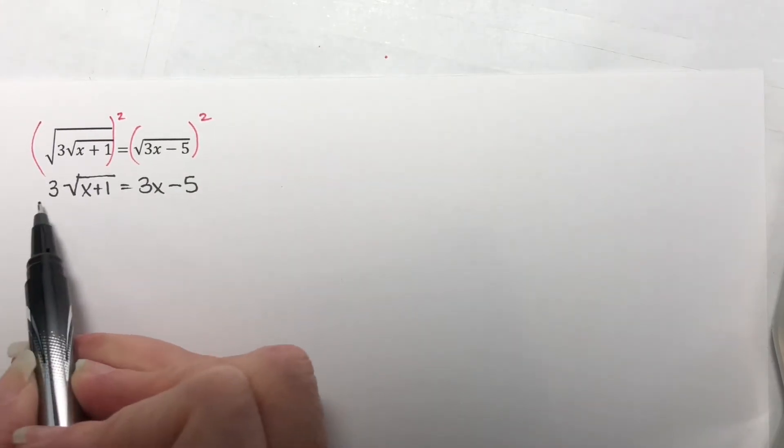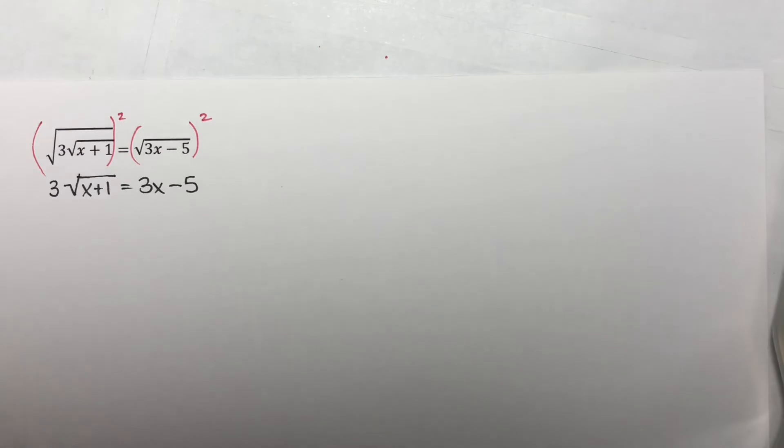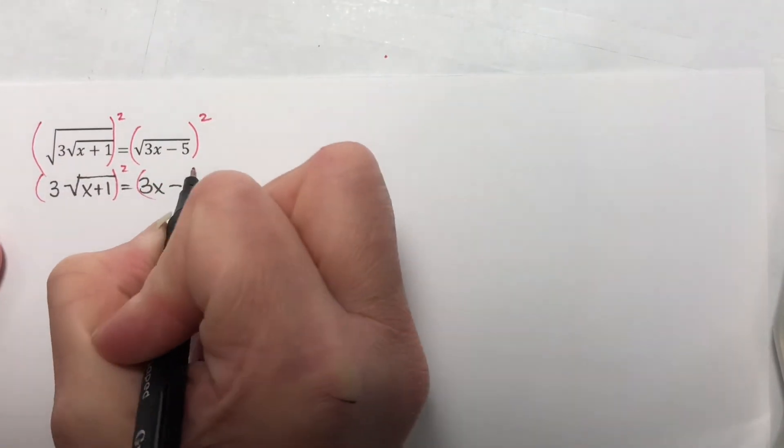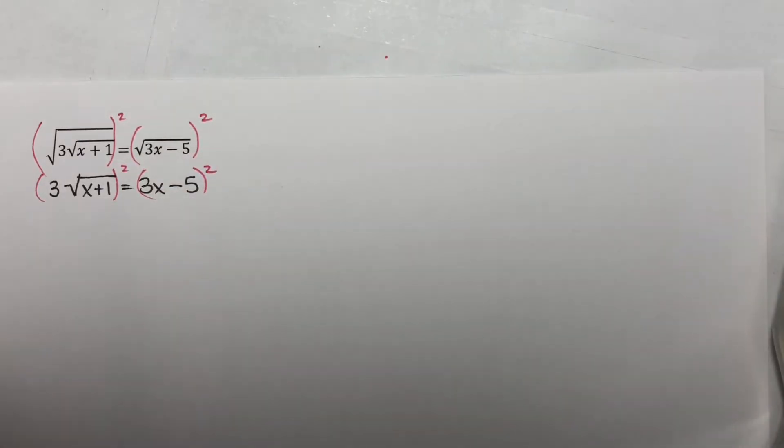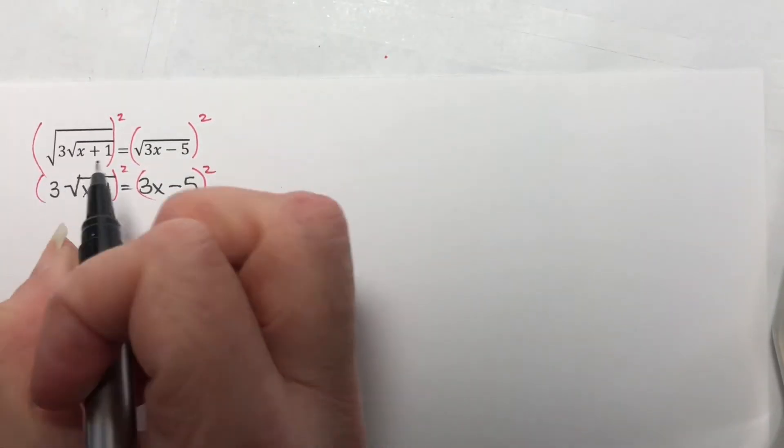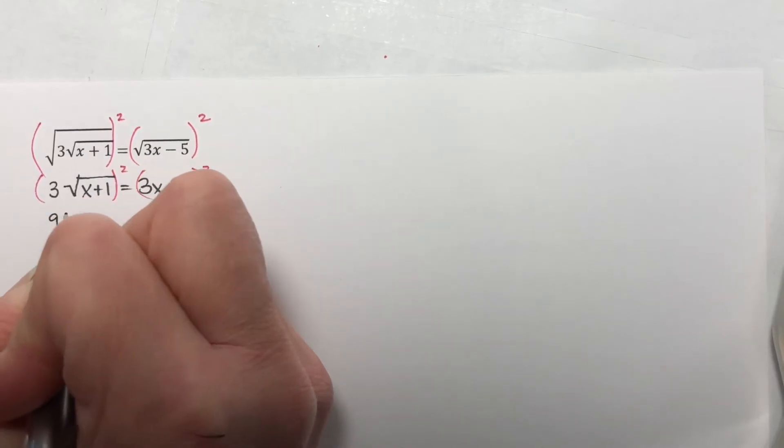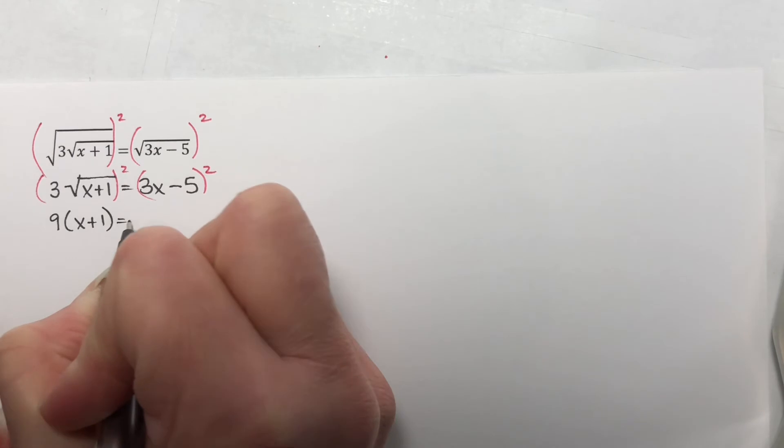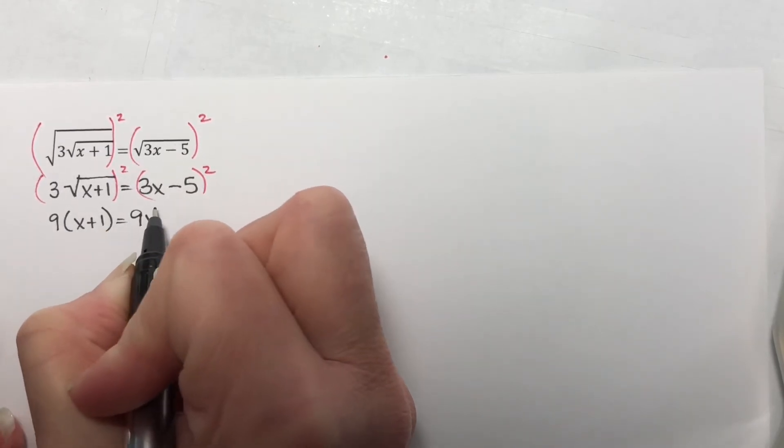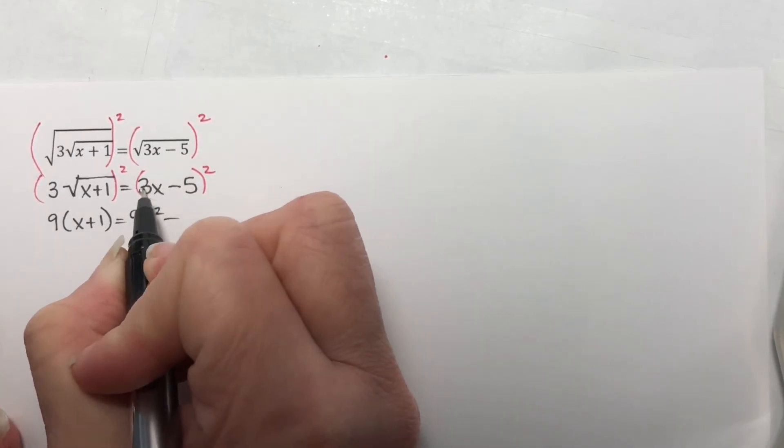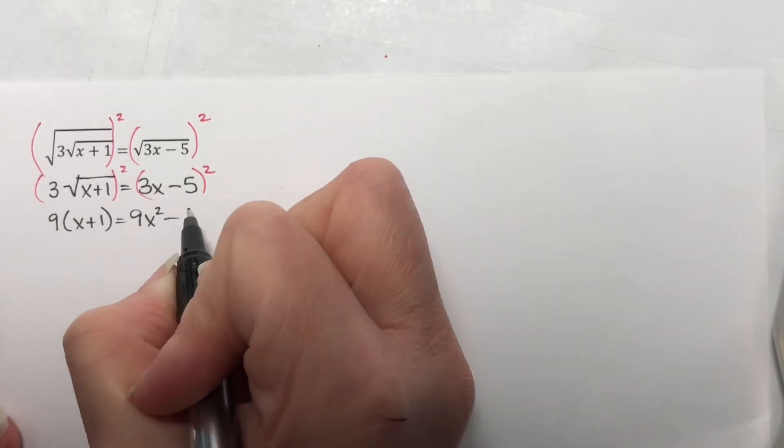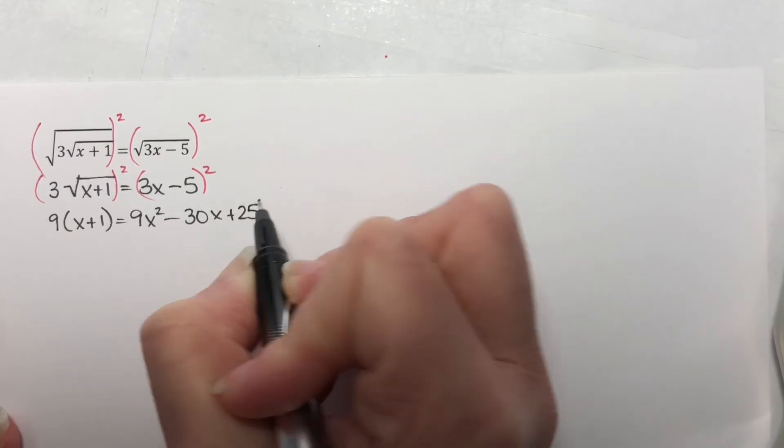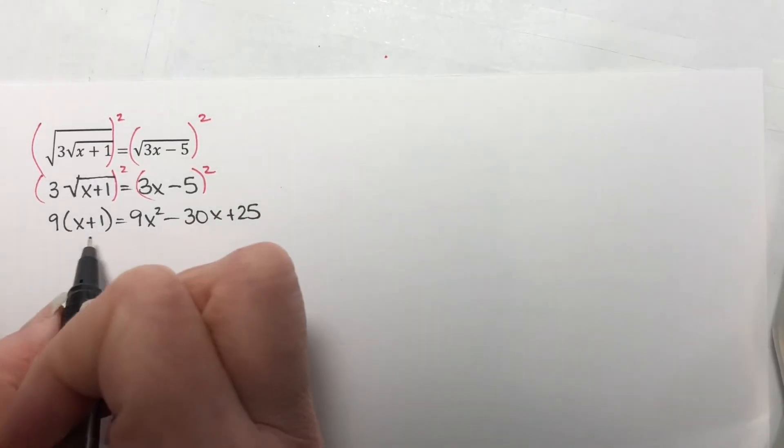Now if I could divide both sides by 3, and it worked out evenly, I would do that. But since it doesn't, I'm going to square both sides again. Square the 3, and you get a 9 times x plus 1 is equal to, when you square this, you get 9x squared minus 15 and double that to get 30x plus 5 squared is 25. Distribute the 9.